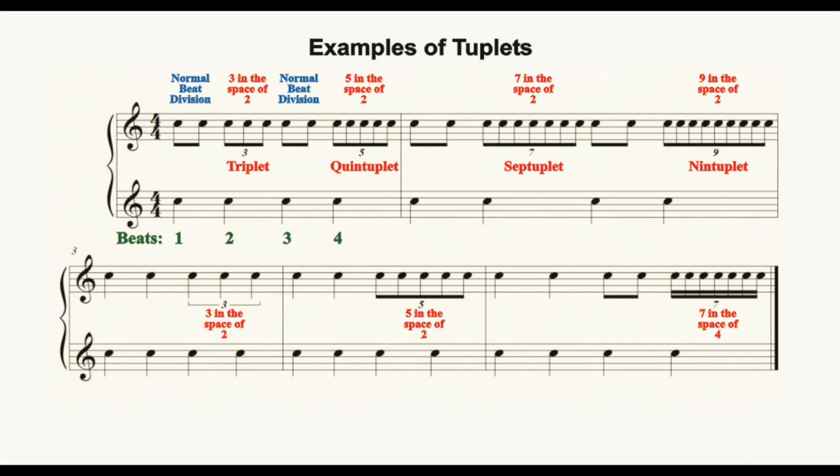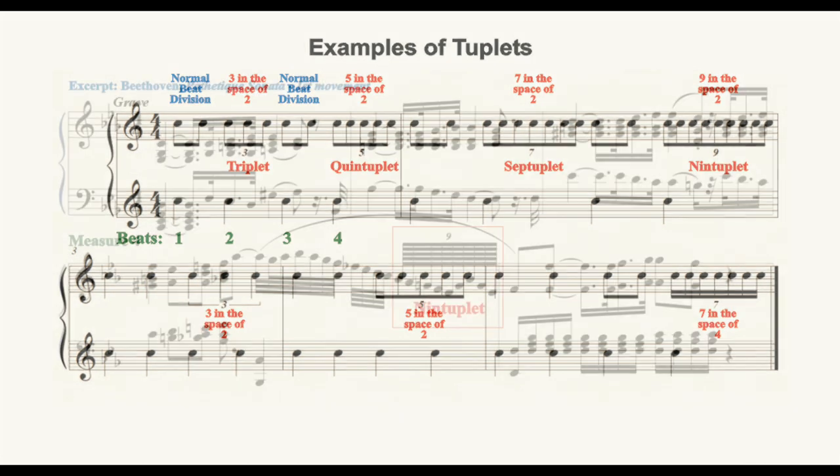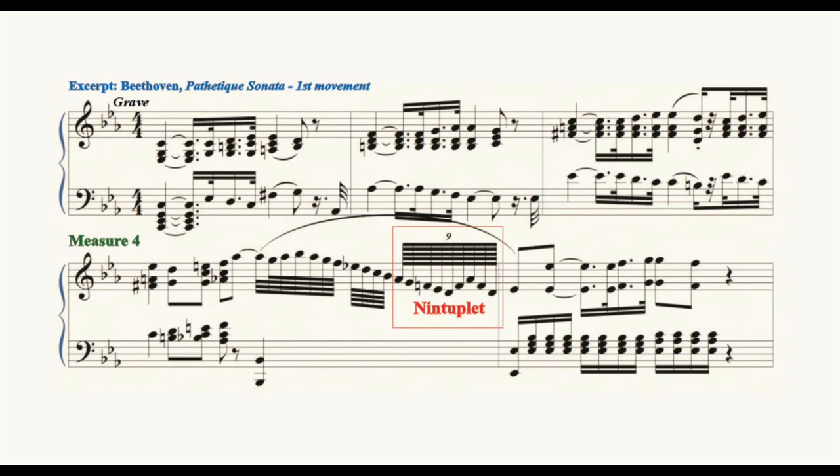In the next example, we see a nintuplet, which is a series of nine eighth notes replacing a group of two eighth notes. We can see a real-world example of the nintuplet in Beethoven's Pathétique Sonata. In this excerpt, looking in the fourth measure, we find a nintuplet where a series of nine one-twenty-eighth notes has replaced a single sixteenth note. This looks nearly impossible to perform due to the apparent notational speed.